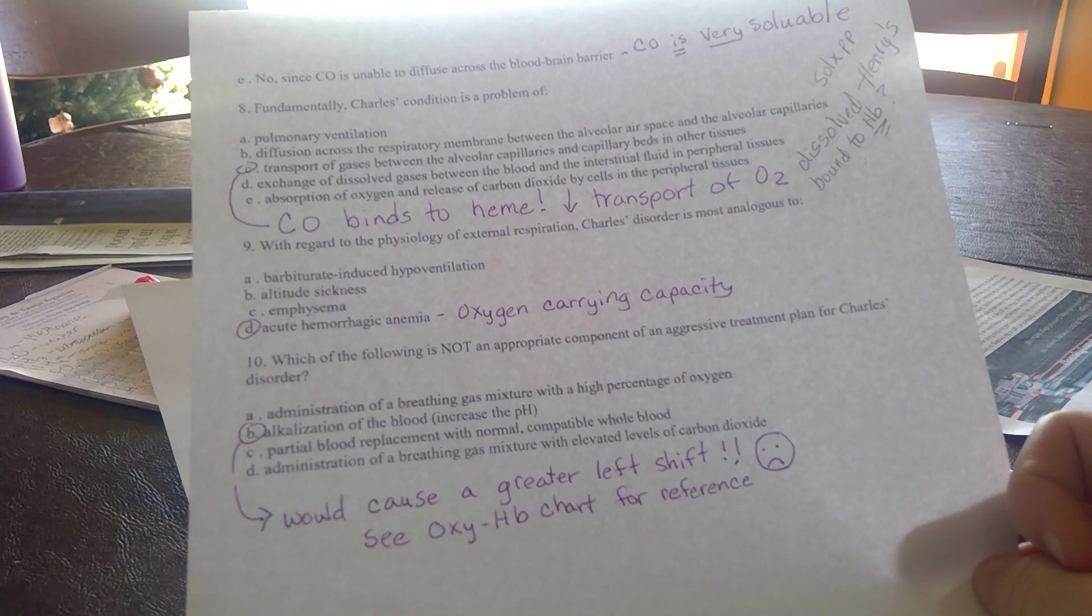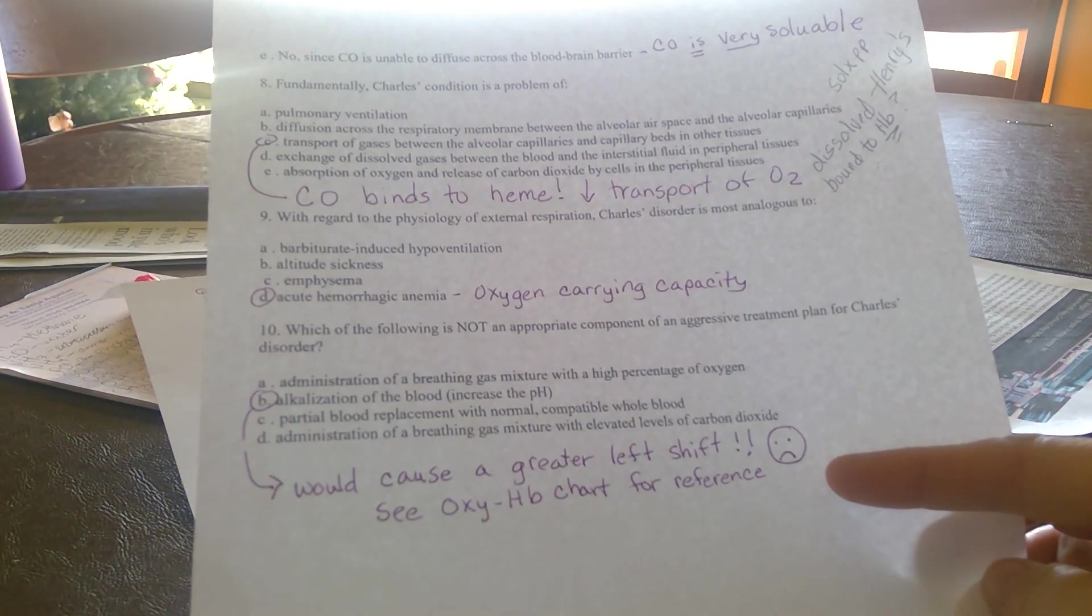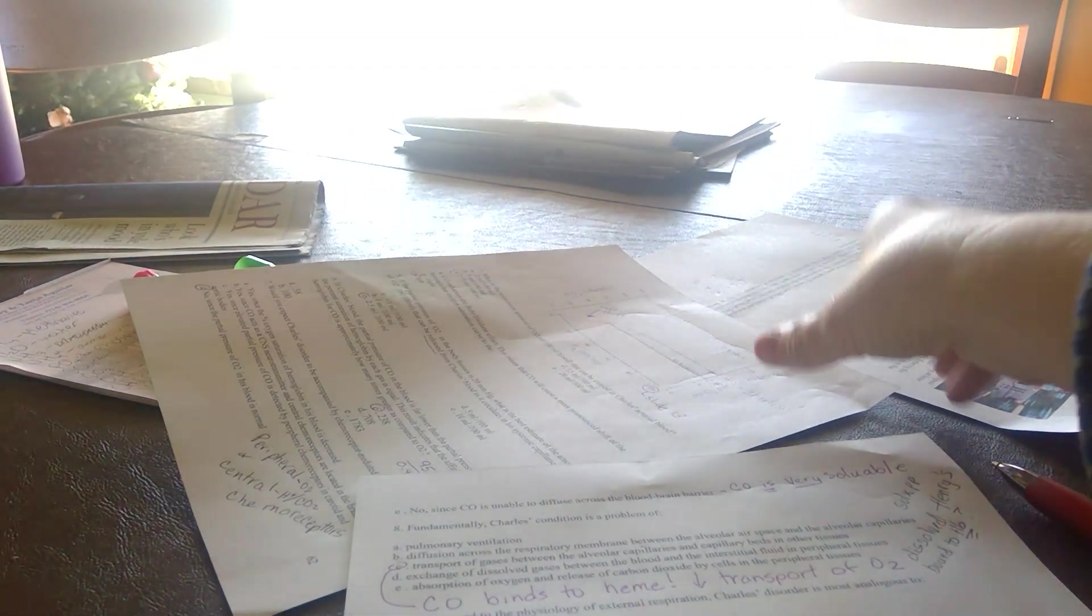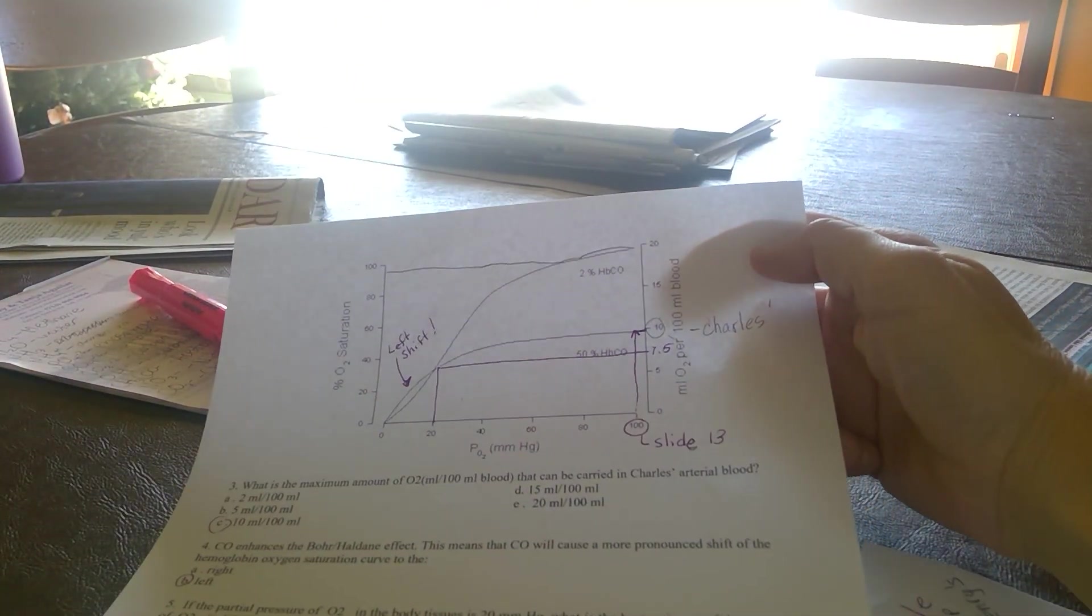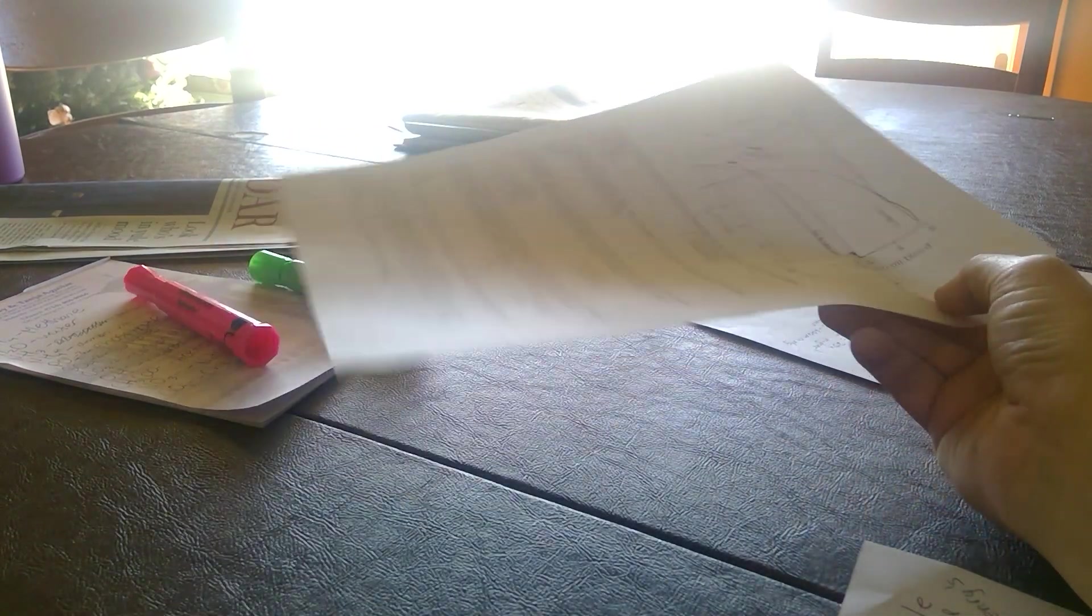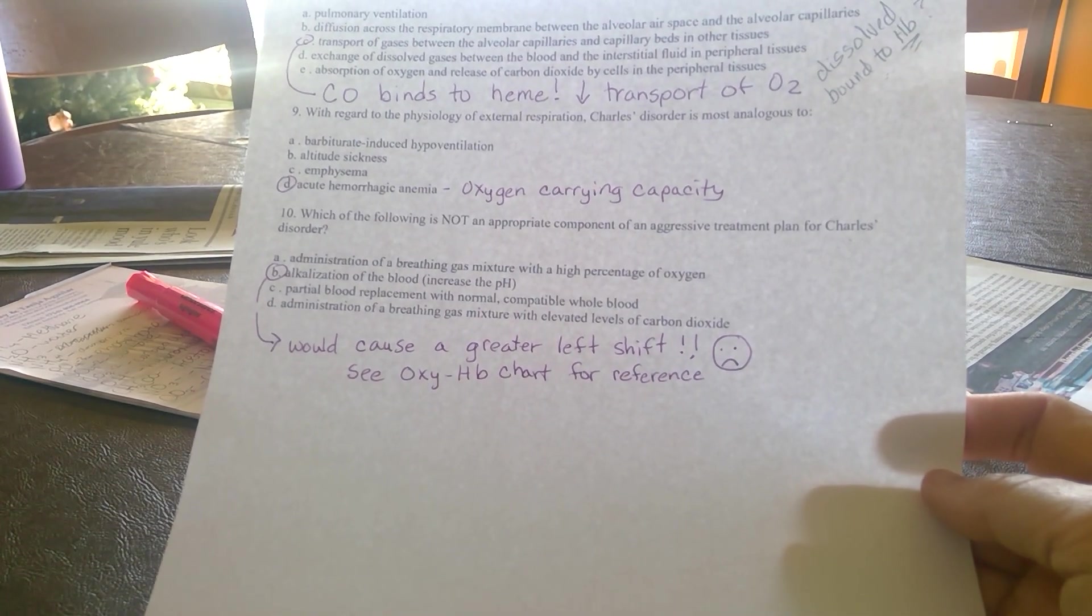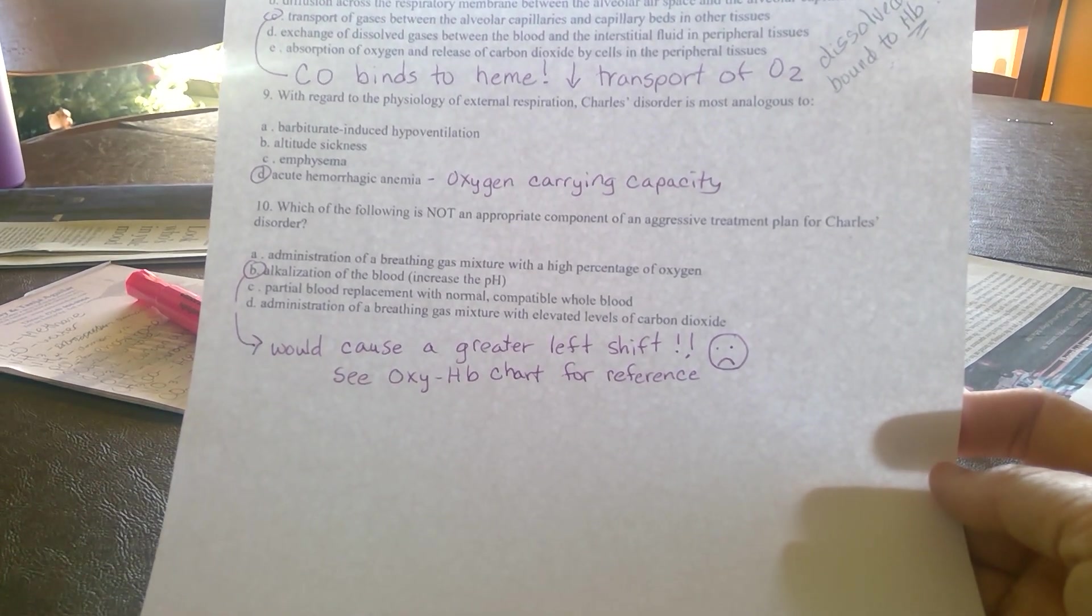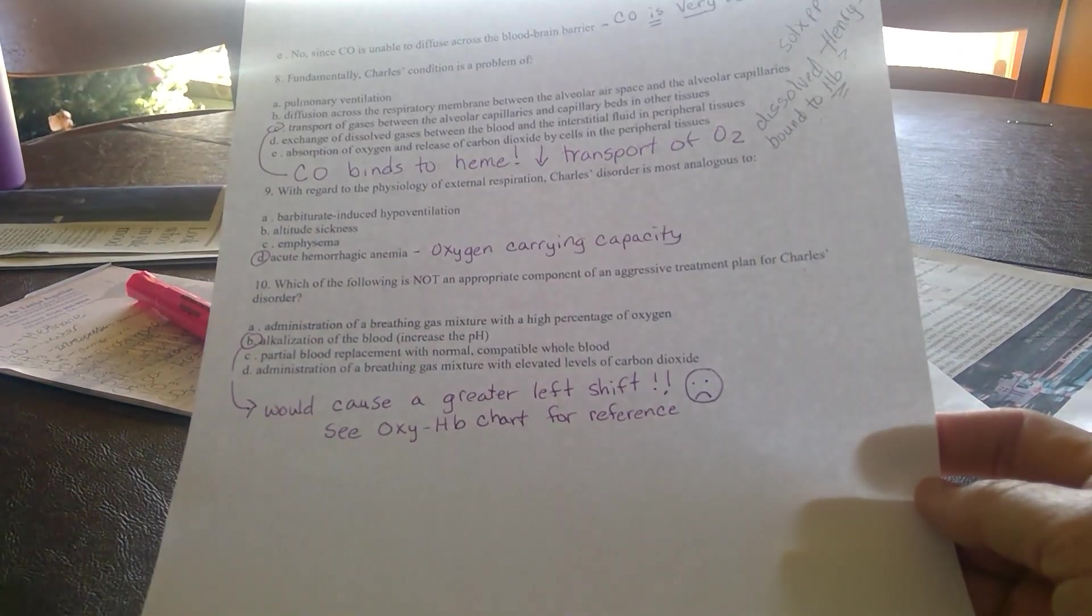We could actually give him carbon dioxide to breathe. This would cause a right shift if you look at your oxygen-hemoglobin dissociation curves. Anything we do that causes a more pronounced left shift would hurt Charles. He already has a left shift. Increasing the pH, making his blood more alkaline, would cause a greater left shift. This would not help Charles. B is the correct answer.